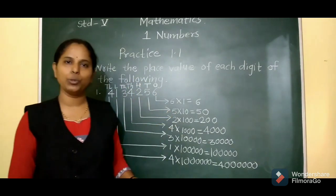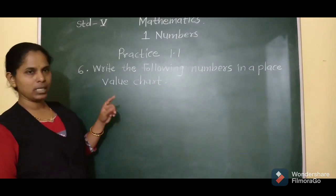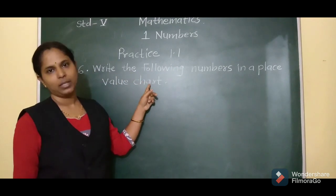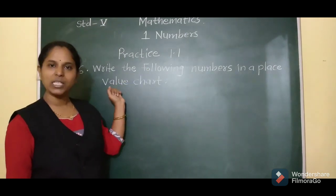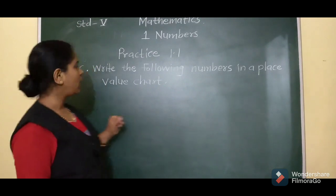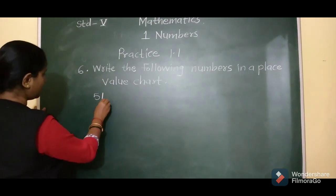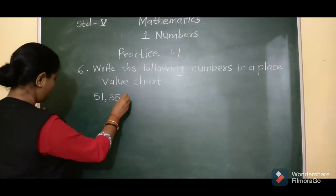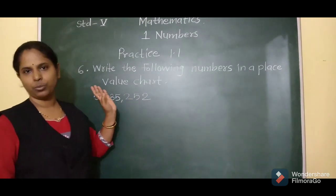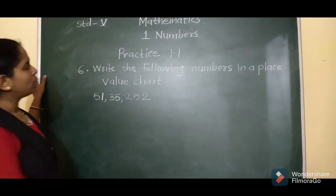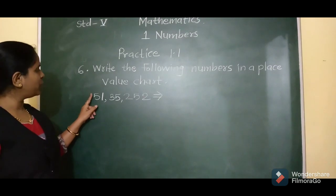The remaining 2 questions you will have to do as homework. Next question is question number 6: write the following numbers in a place value chart. In the last lecture I showed you how to write numbers in a place value chart. I will solve the first one and show you. The number is 51,35,252.